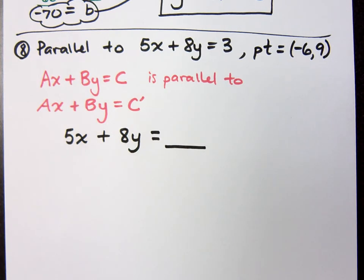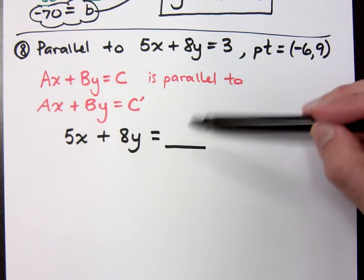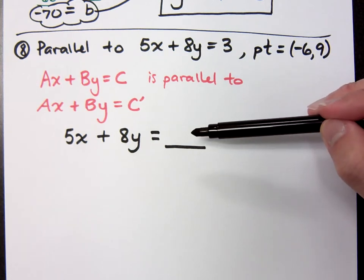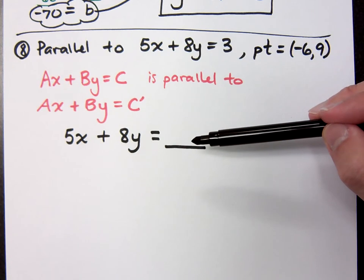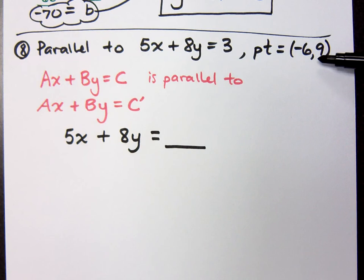Now I know what that number is not going to be. What can this not equal? Why can it not equal 3? If it was 3, it would be the same line, and these guys would not be parallel. So I have to figure out what number is it. Should I just kind of guess and hope I get it right? No? How do I figure it out? You plug in the points. I've got a point that I go through, right?